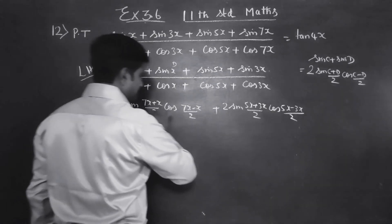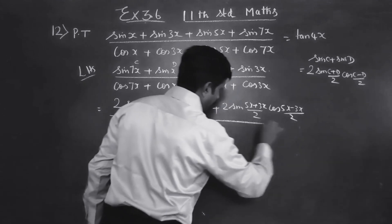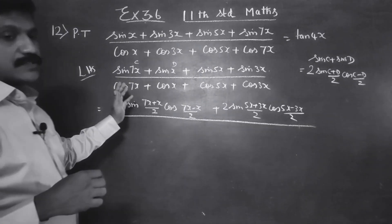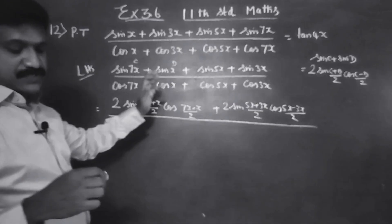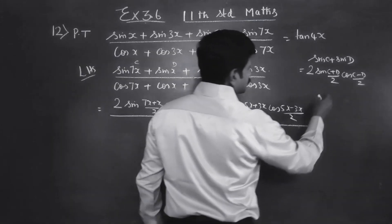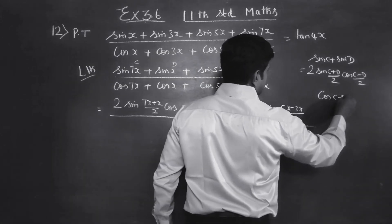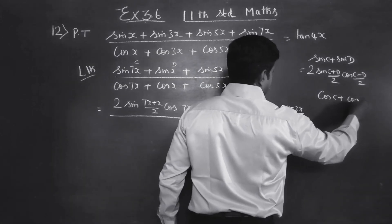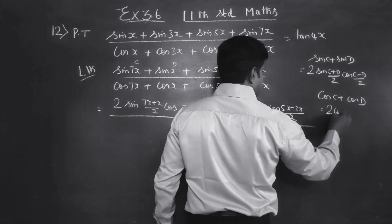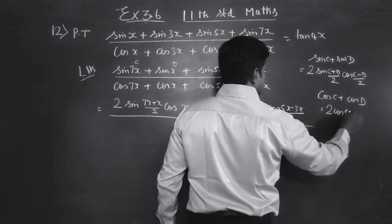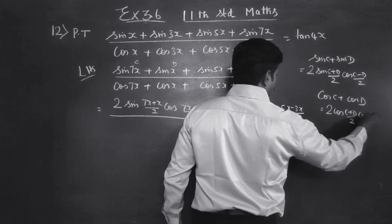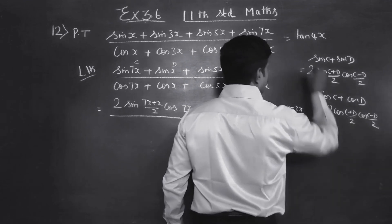Coming to the denominator, this is the cos c plus cos d formula. What is cos c plus cos d? Cos c plus cos d formula is 2 times cos (c plus d) by 2, cos (c minus d) by 2.